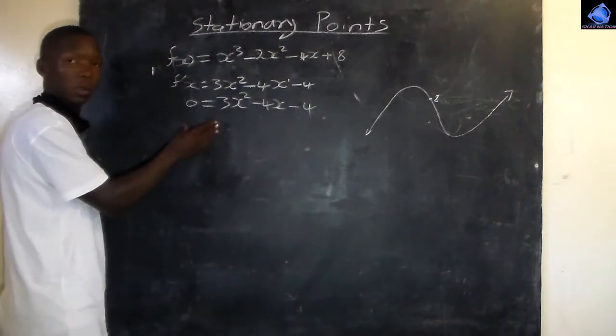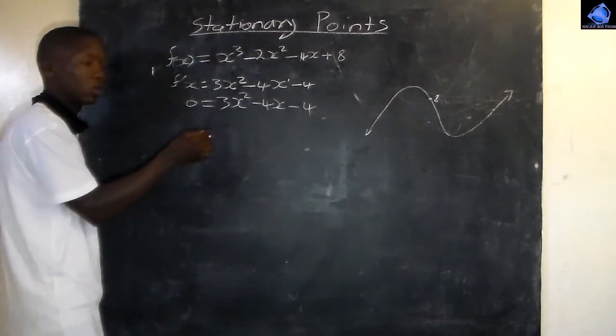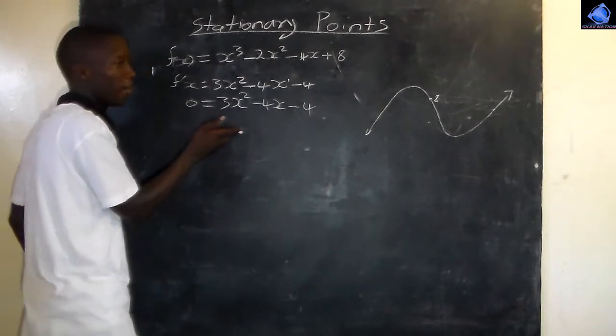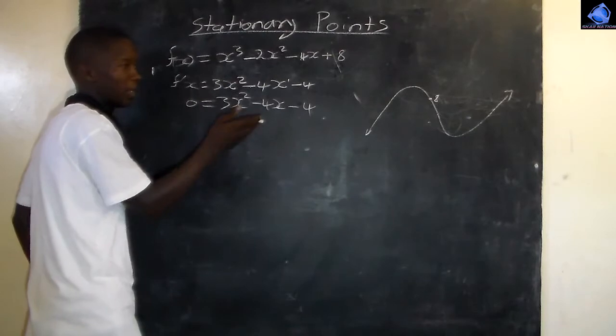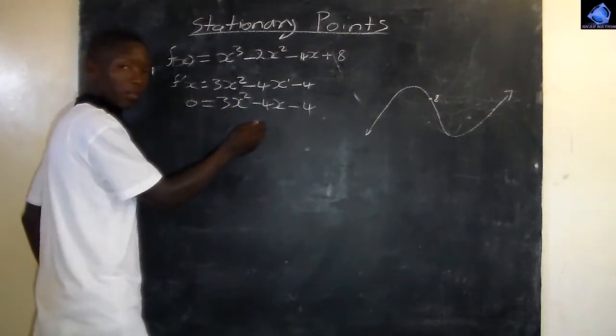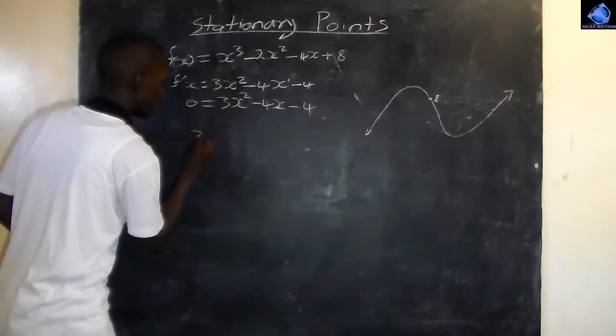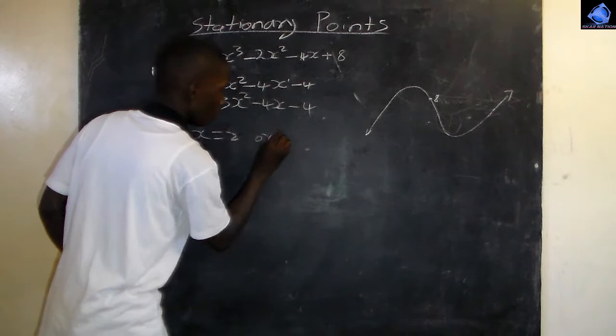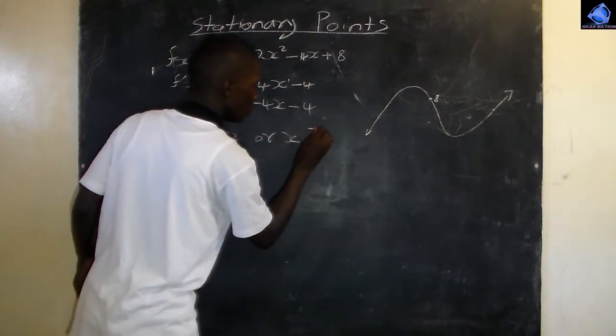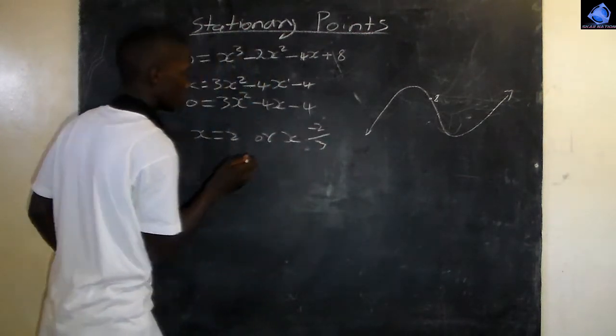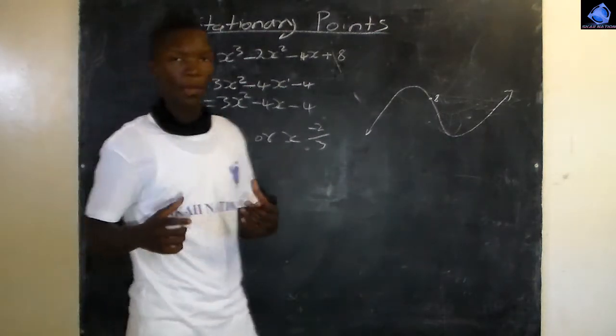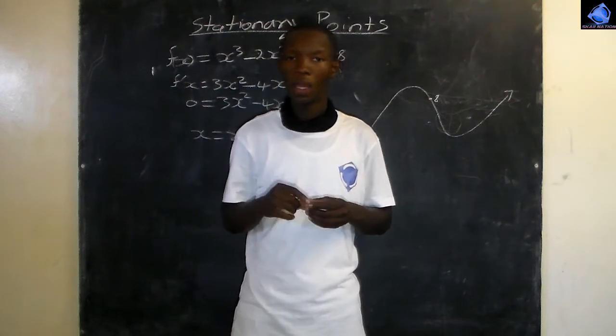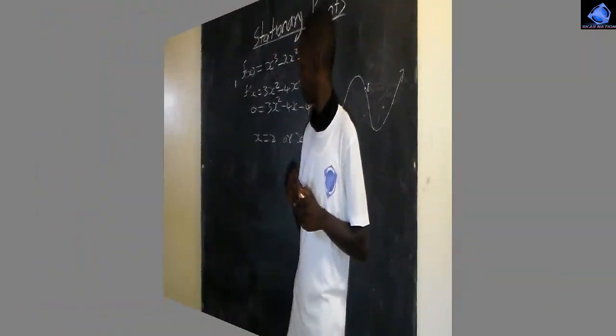Step 3, we solve for x. Using the quadratic formula, x equals 2 or x equals negative 2 over 3. These are the x values.